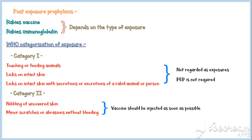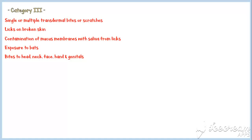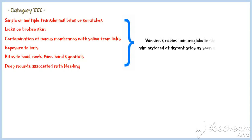Category 3 exposures include single or multiple transdermal bites or scratches, licks on broken skin, contamination of mucous membranes with saliva from licks, exposure to bats, bites to head, neck, face, hand, and genitals, and deep wounds associated with bleeding. In all these instances, both rabies vaccine and immunoglobulin should be administered at distant sites as soon as possible.